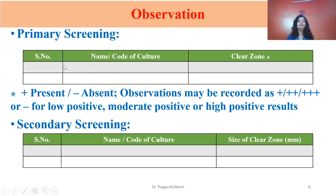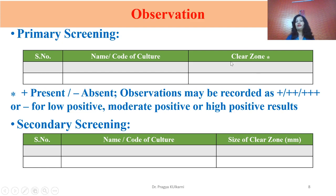Record your observations in a table. For primary screening, tabulate the serial number, name or code of the culture, and observation — use a plus sign for presence of clear zone or minus sign for absence. You may also record as single positive, double positive, or triple positive for least, moderate, or highly positive cultures. For secondary screening, record the serial number, name or code of the culture, and the size of the clear zone in millimeters measured with a scale.